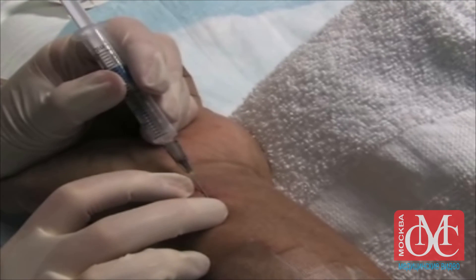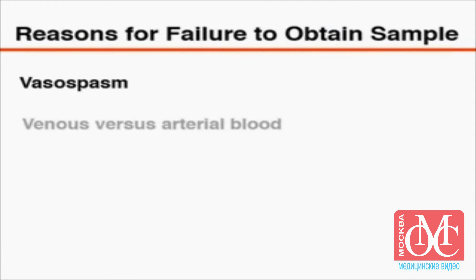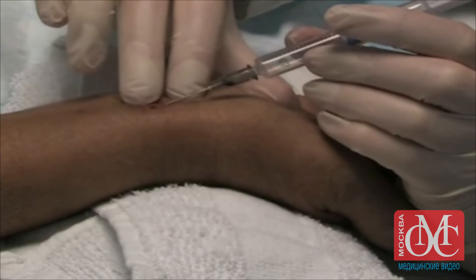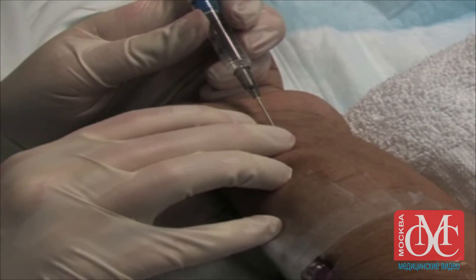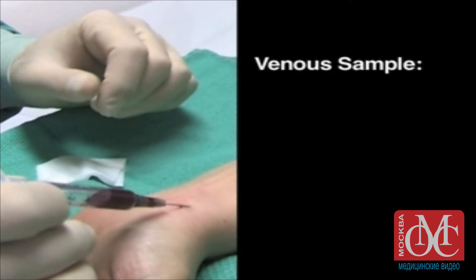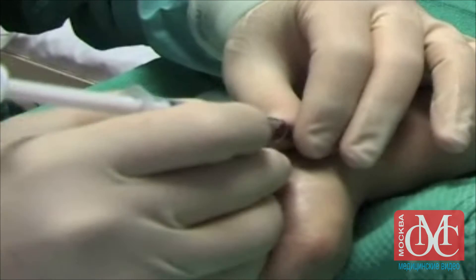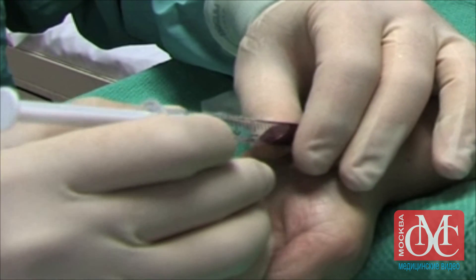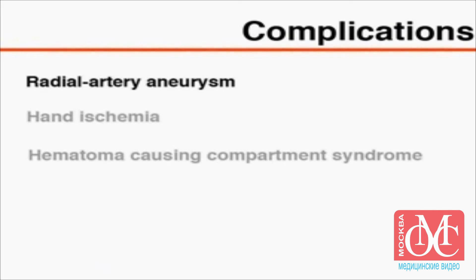The most common technical difficulty associated with radial arterial puncture for arterial blood gas analysis is failure to obtain a blood sample because of vasospasm, or obtaining venous instead of arterial blood. If vasospasm is suspected, abort the procedure and re-attempt it on the other wrist. A blood sample is likely to be venous if it is non-pulsatile and dark in colour and it flows slowly. It should be noted, however, that very deoxygenated blood in a patient with hypoxemia could also appear dark even though it is arterial. Serious vascular complications of radial arterial puncture are rare and include radial arterial aneurysm, hand ischemia, and hematoma causing compartment syndrome.